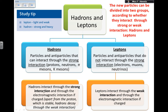Hadrons interact through the strong interaction and through the electromagnetic interaction if they are charged. If hadrons decay, they decay through the weak interaction — and this applies to all of them apart from the proton, because the proton is stable. Leptons interact through the weak interaction and through the electromagnetic interaction if they are charged. So in summary: strong interaction for hadrons, weak for leptons, and electromagnetic for both if charged; decays involve the weak interaction for all hadrons except the proton.